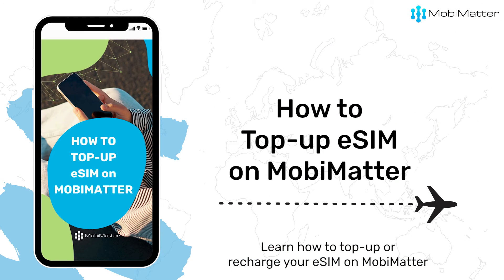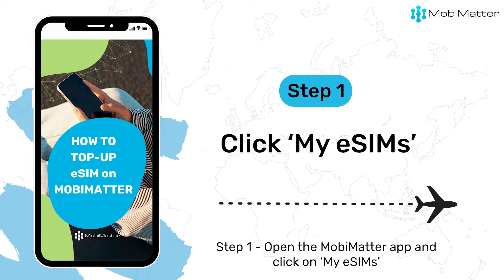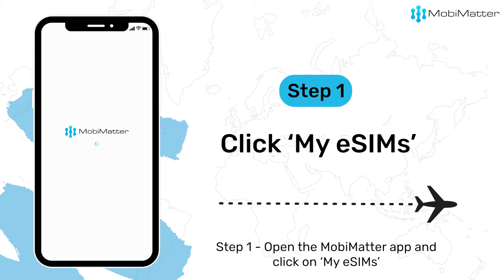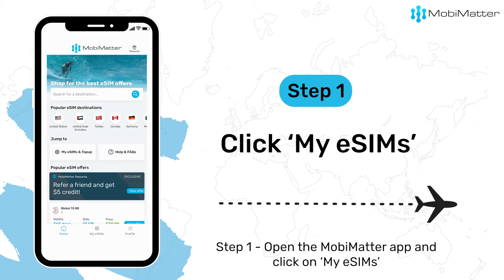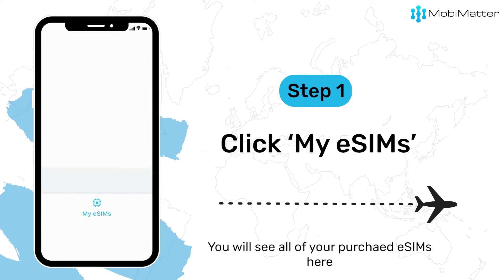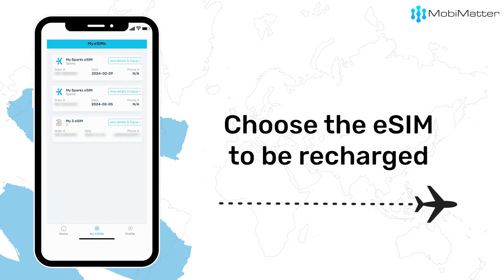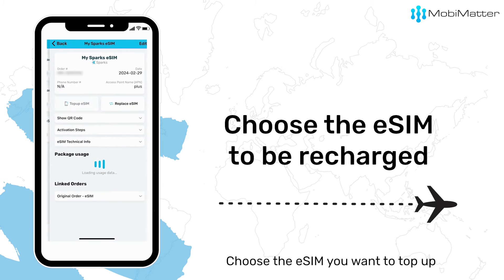Learn how to top up or recharge your eSIM on MobiMatter. Step 1: Open the MobiMatter app and click on My eSIMs. You will see all of your purchased eSIMs here. Choose the eSIM you want to top up.